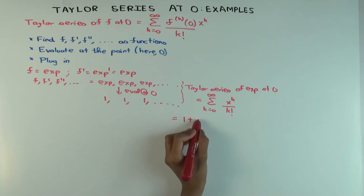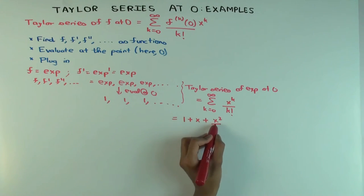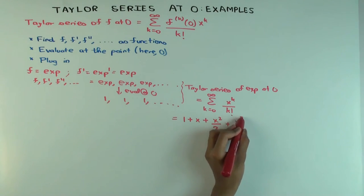Next one: x squared over two factorial. X squared over two factorial, which I could write as x squared over two if I wanted. And then the next one is x cubed over three factorial, which is six.